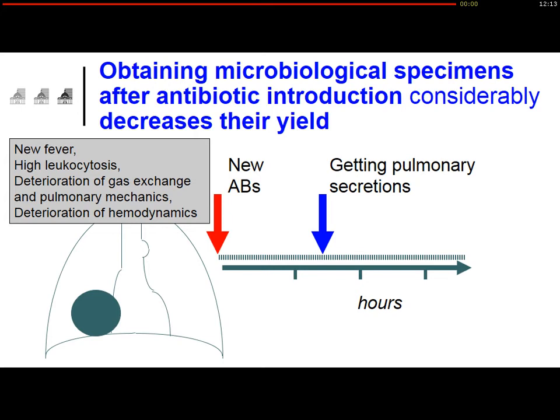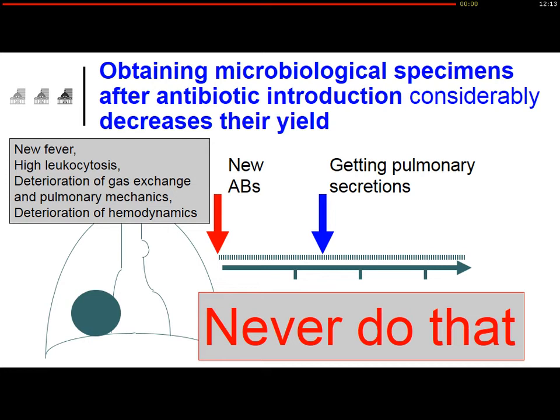Only one dose of antibiotics will decrease the bacterial burden in the lung, and therefore you will not get the information you need for improving antimicrobial therapy. Never do that. We need to give antibiotics as soon as possible, but getting a good specimen takes only a few minutes, whatever the site of infection. You need to start antibiotics very early — this is absolutely clear — but before doing so, you need to get a good specimen for the lab.